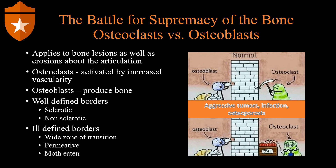Now we're going to talk about the battle for supremacy of the bone — the battle between the osteoclast and the osteoblast. As you remember from medical school, osteoblasts are the cells that produce bone. In imaging terms, they deposit calcium, so you will see bone production, trabecular bone, and increased density on radiograph. Osteoclasts, on the other hand, are the cells that eat bone — causing bone resorption and destruction, which will appear as lucency on the radiograph.